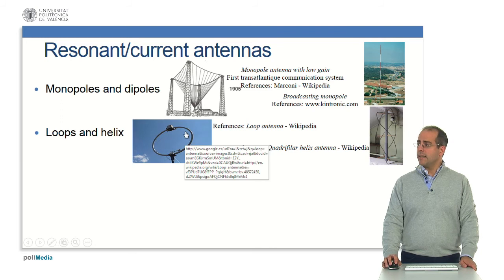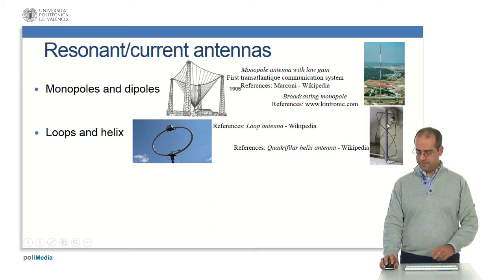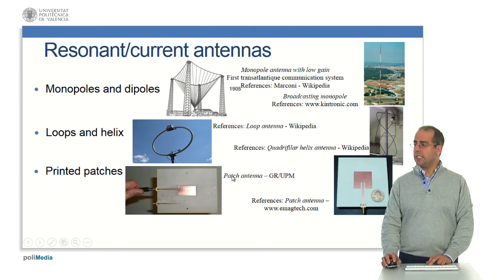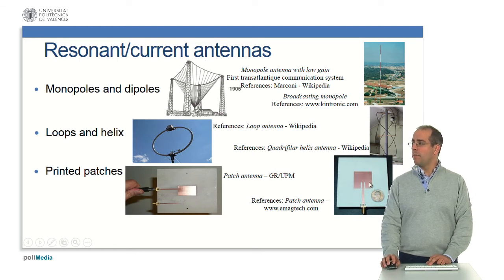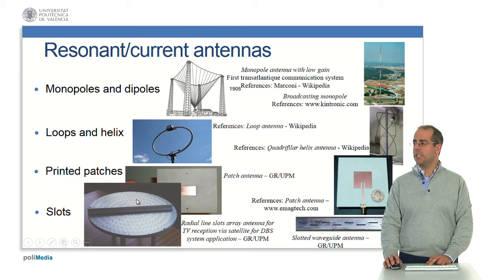Loop and helix antennas — here we have an example of loop antennas, and here another example of quadrifilar helix antennas. Printed patches — here we have an example of a printed microstrip patch antenna, and here another example of a printed microstrip patch antenna. And then slot antennas — here we have an example of radial line slot array antennas for TV reception via satellites for DBS system application, and here an example of slotted waveguide antennas.